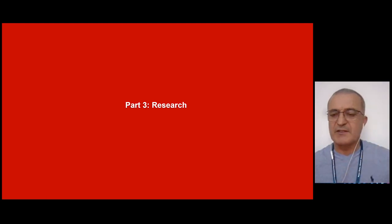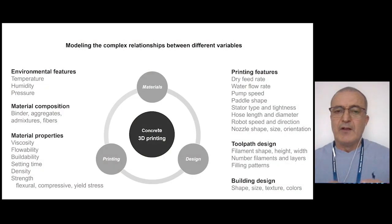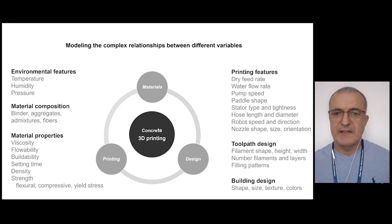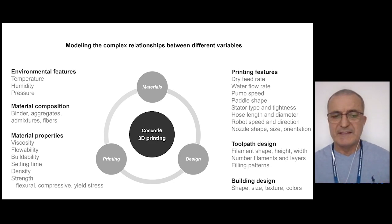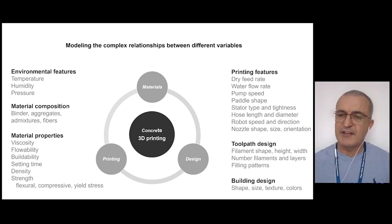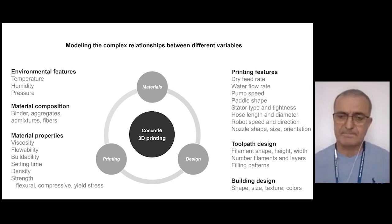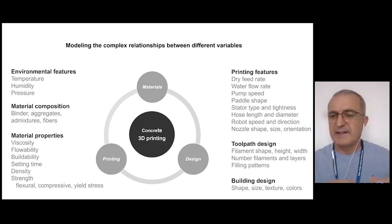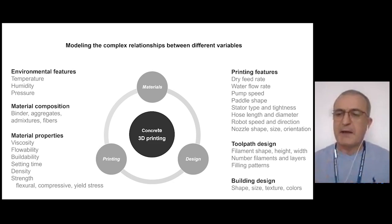Talking about the research to enable this idea: printing is a very complex system with many different variables — environmental variables like temperature, humidity, and pressure; material properties like viscosity, flowability, and buildability; printing system variables like extrusion speed and robotic arm speed; and design variables like tool path design, filament width and length, and specific patterns. What we are trying to do is create a mathematical model relating all these variables to achieve high control of the printing process — shape accuracy and structural stability.